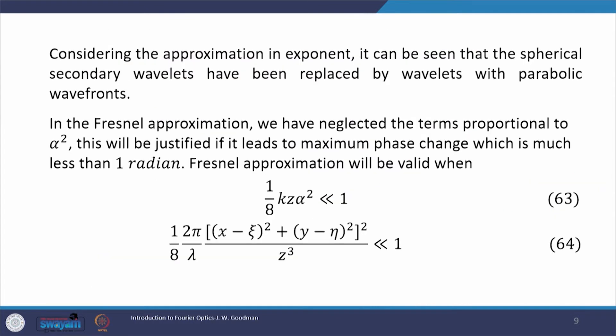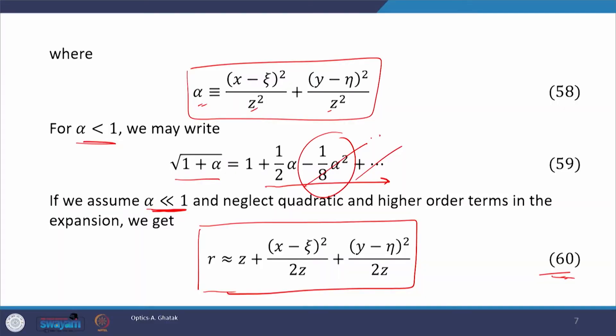Considering the approximation in the exponent, it can be seen that the spherical secondary wavelets have been replaced by wavelets with a parabolic wavefront — you see the quadratic term, so the wavefront is now parabolic. In the Fresnel approximation, the only approximation used is neglecting the higher order terms in this expansion.